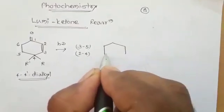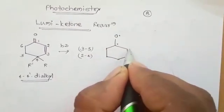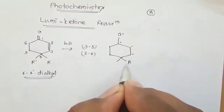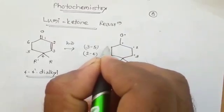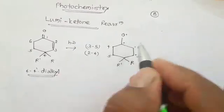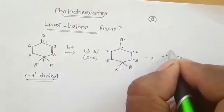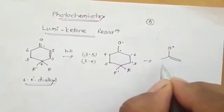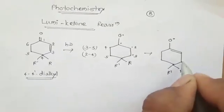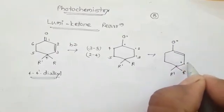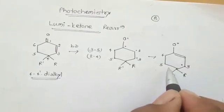In the mechanism, starting with the oxygen radical, we then have radicals forming at each position. Here position 2 and position 3 have radicals, and position 5 also has a radical. To make a bond between positions 3 and 5, we first have to break the bond between positions 4 and 5.